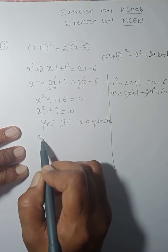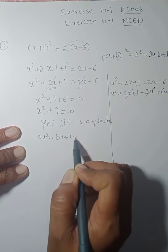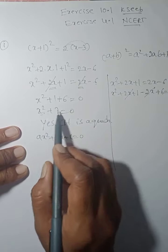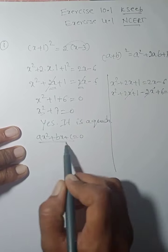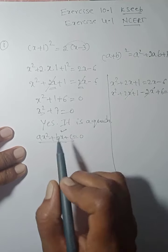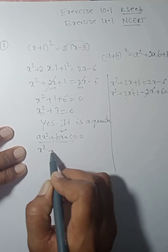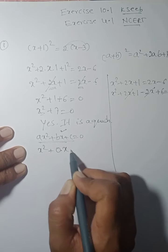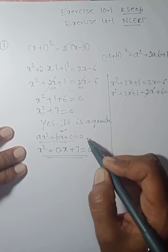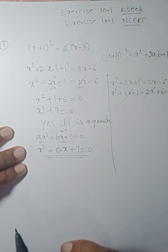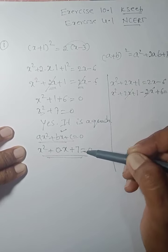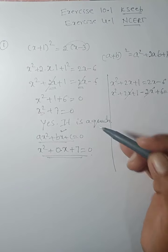We can confirm this is quadratic because it can be written in the form ax² + bx + c = 0. Here we only see two terms, but it can be written as x² + 0·x + 7 = 0, where the coefficient of x is zero. So this equation is indeed a quadratic equation.